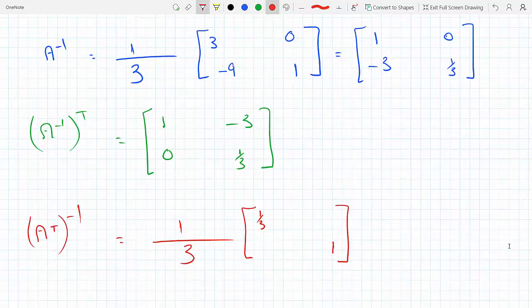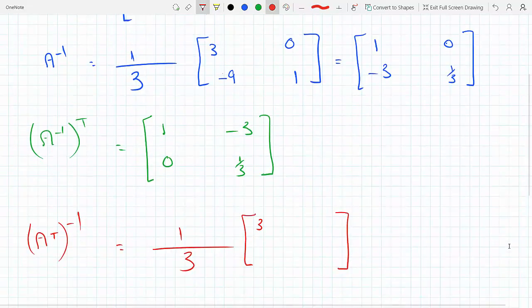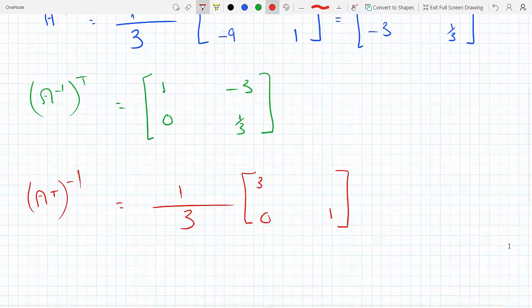And then like I did before, I will switch these two—sorry again, I went off the wrong one, A transpose—so 3, 1, and I put a minus sign on this: 0, minus 9. And I multiply each one by 1/3, so I would get 1, minus 3, 0, 1/3.